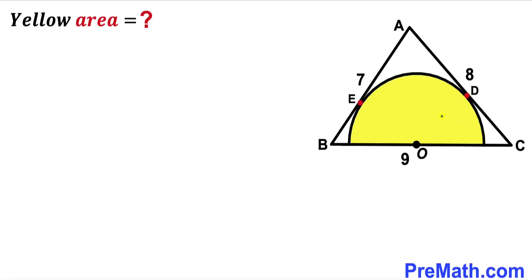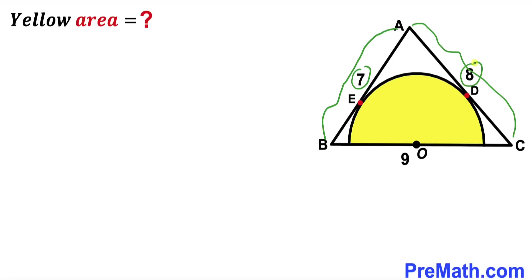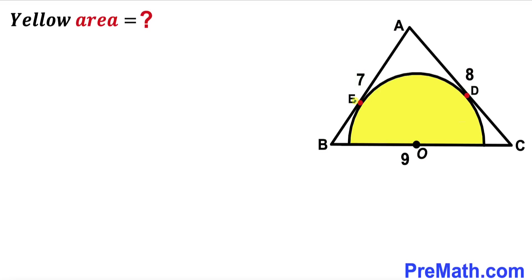Welcome to Pre-Math. In this video we have a yellow shaded semicircle with center O fully inscribed in triangle ABC, where side length AB is 7 units, side length AC is 8 units, and side BC is 9 units. E and D are the points of tangency, and our task is to calculate the area of this yellow shaded semicircle.